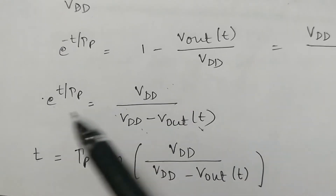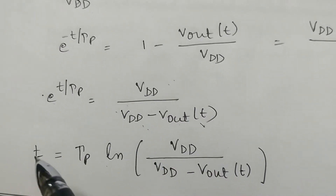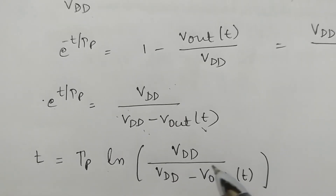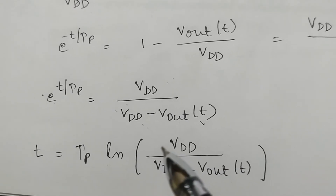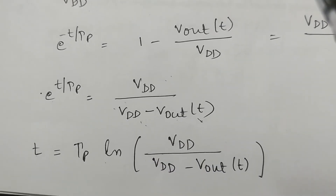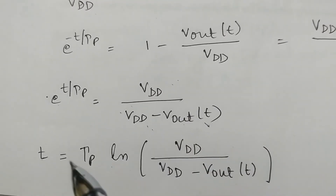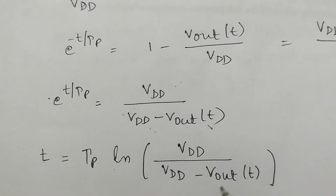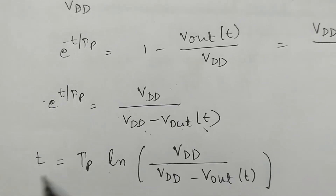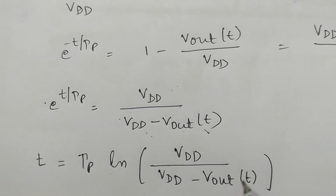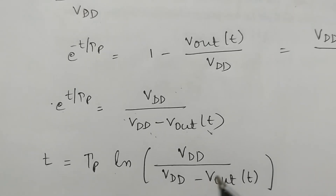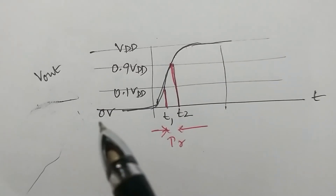This expression allows us to substitute values of time and output voltage. We take T1 as the time when the output reaches 0.1·VDD (10% of maximum), and T2 as the time when the output reaches 0.9·VDD (90% of maximum). The difference T2 − T1 gives the rise time.